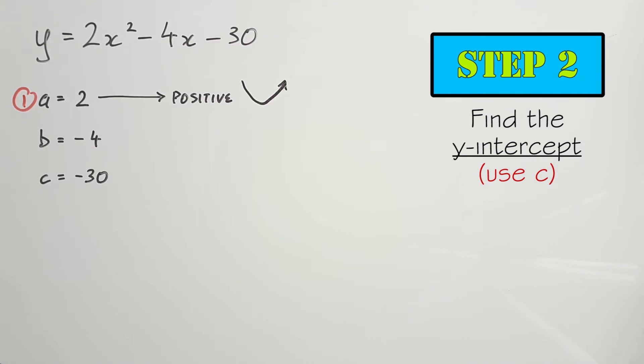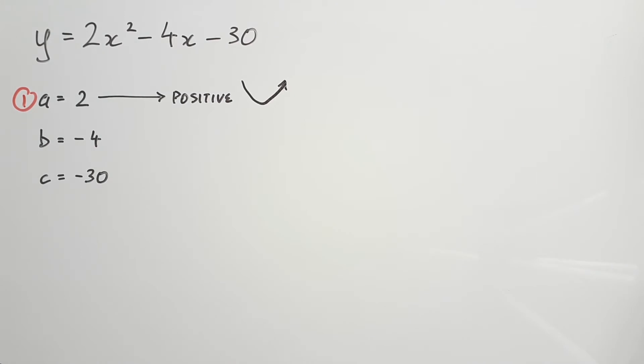Step 2: Find the y-intercept. This one's easy. It's literally our c value of negative 30. Yep, that's it. So the y-intercept is 0, negative 30.